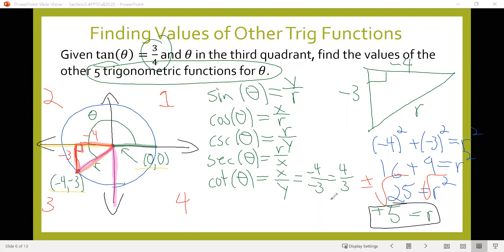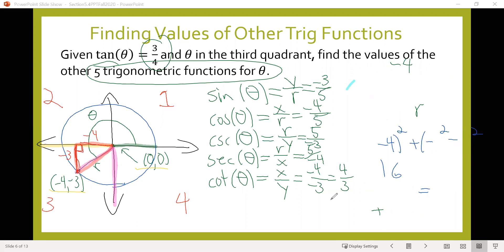For sine, we do y over r, so negative 3 over 5. Cosine is x over r, so negative 4 over 5. Cosecant is r over y, which is 5 over negative 3 or negative 5-thirds. Secant is r over x, so 5 over negative 4. This is messy, so let me rewrite it.